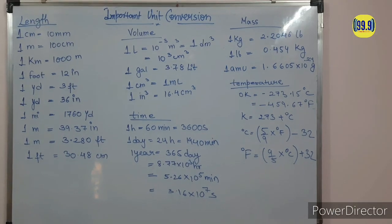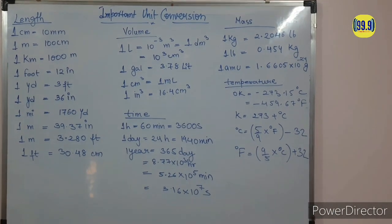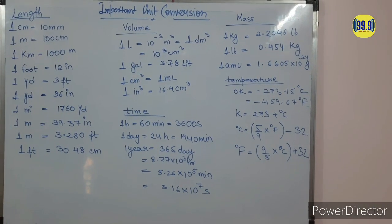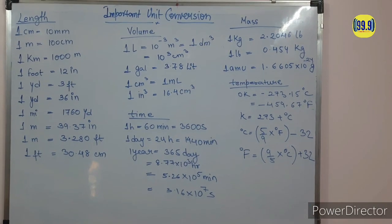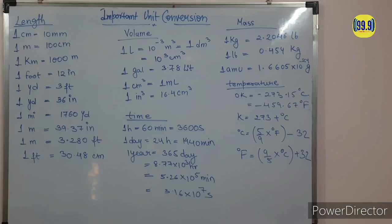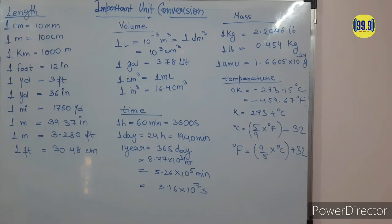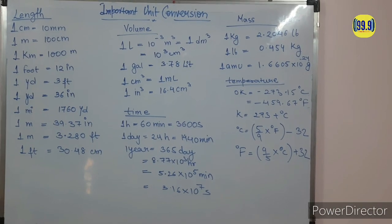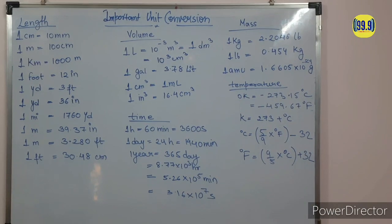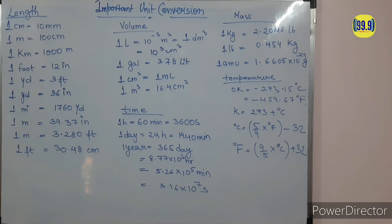Let's get started with the video. First, we discuss the units and unit conversion of length. Most of the unit conversions you know very well, but I mention them here just for revision. For length: 1 centimeter is equal to 10 mm, 1 meter is equal to 100 centimeter, and 1 kilometer is equal to 1000 meter. 1 foot is equal to 12 inch, 1 yard is equal to 3 feet.